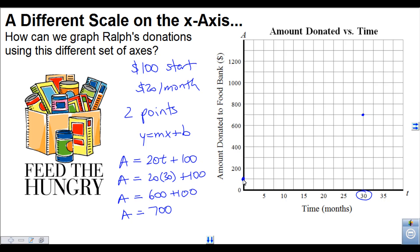And then again, all we need is to get a straight edge and draw a straight line. And there is another representation of this relationship between amount donated and time in months. So really, the big idea here is that we need two points to create any graph of a linear relation.